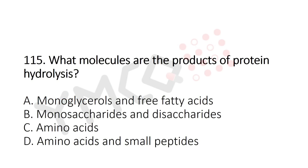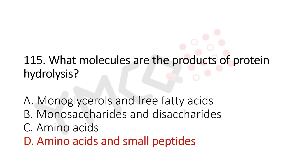Now Question 115: What molecules are products of protein hydrolysis? Option A: monoglycerol and free fatty acids, Option B: monosaccharides and disaccharides, Option C: amino acids, Option D: amino acids and small peptides. The answer is Option D: amino acids and small peptides.